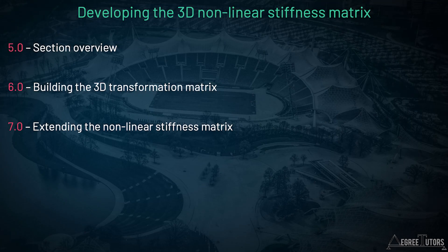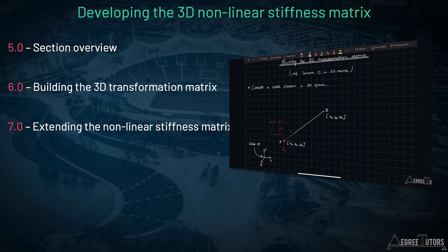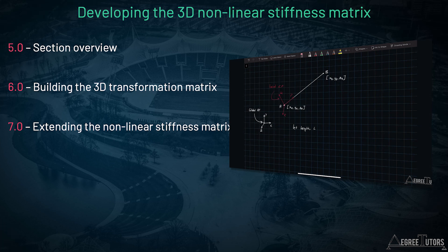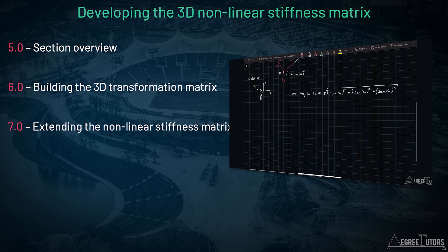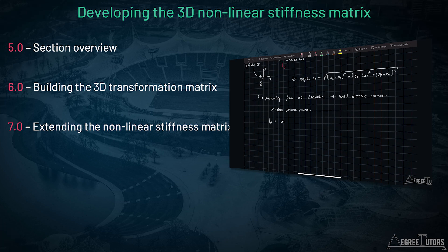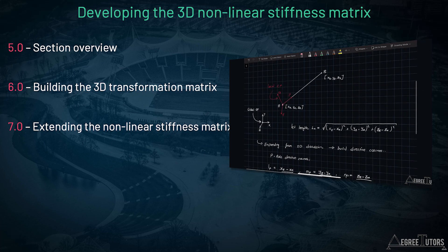In this section, we'll cover how to expand the 2D non-linear stiffness matrix we derived previously into 3D. This is actually quite a short section — we can cover what we need to in two lectures. In the first, we'll walk through how to build the 3D transformation matrix. We're going to employ the same approach that we did in the 3D beam and frame finite element analysis course, but we'll go through the process here from scratch.